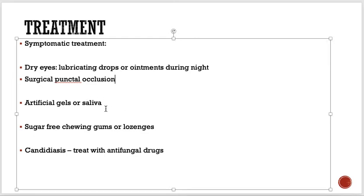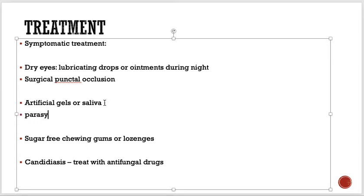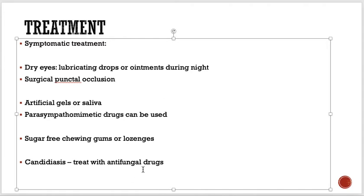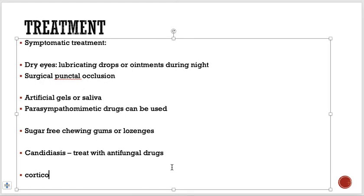Parasympathomimetic drugs can be used to stimulate secretions. Pilocarpine can be given. For candidiasis, oral antifungal drugs such as nystatin can be used. Since it's an autoimmune disorder, we can suppress immunity using corticosteroids, immunosuppressive drugs, or hydroxychloroquine.